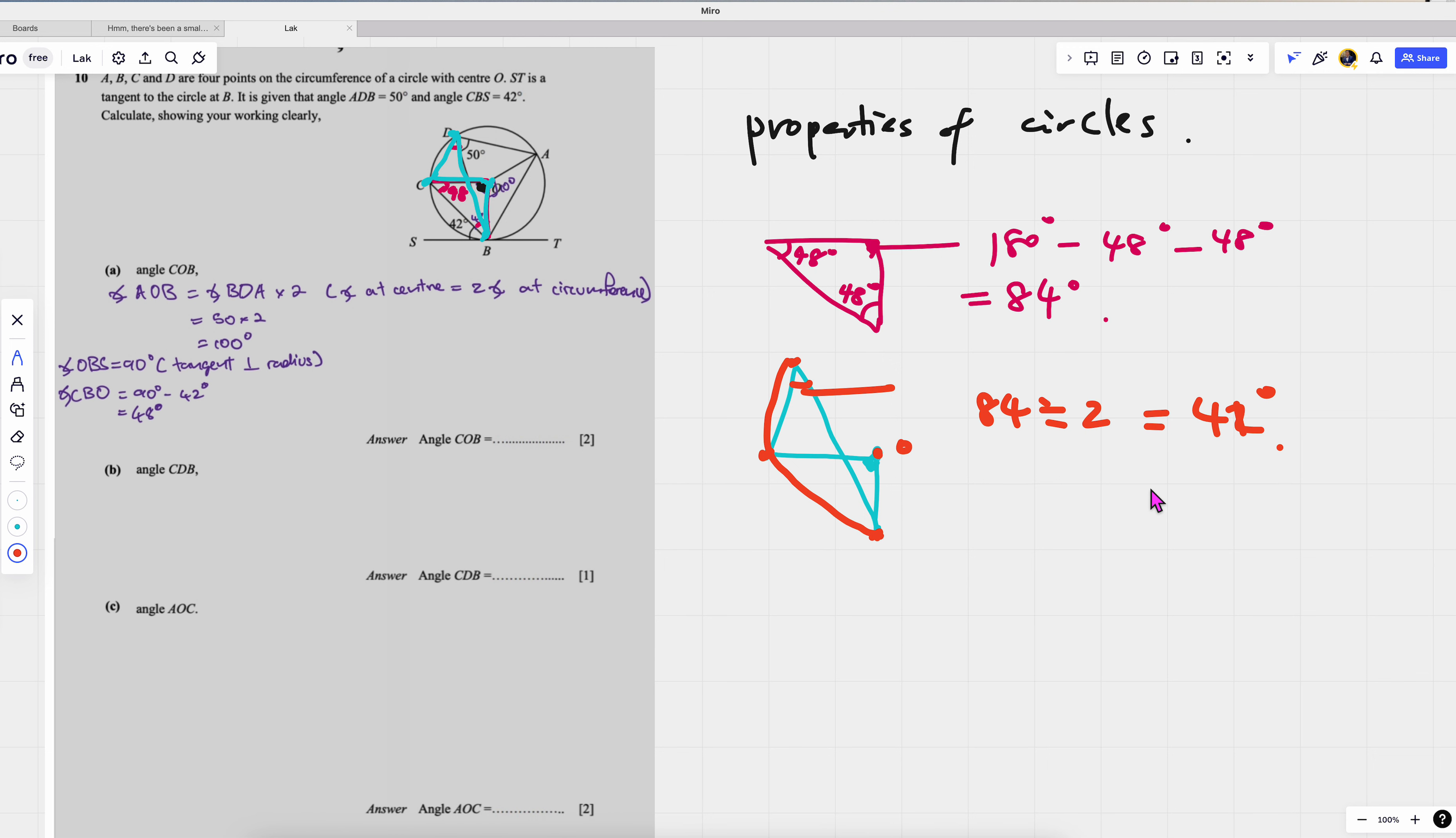Okay, good. Then angle AOC. Where's AOC? AOC is this one. So can I take it as 90? I think... No, because it's the same thing, right?